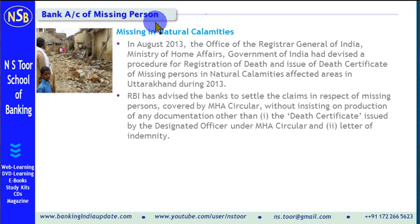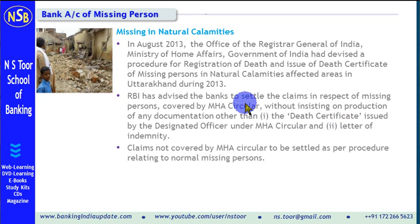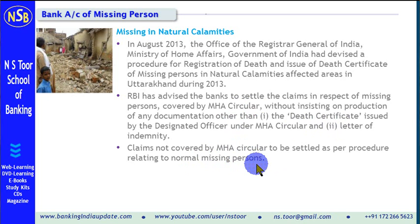So, for those persons who are missing as a result of a natural calamity and are covered under the guidelines issued by the Ministry of Home Affairs, their claims can be settled on the basis of the death certificate and letter of indemnity. But those persons who are not covered under this circular, their claims can be settled by following the procedure applicable to normal missing persons.